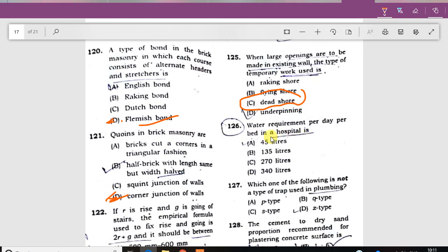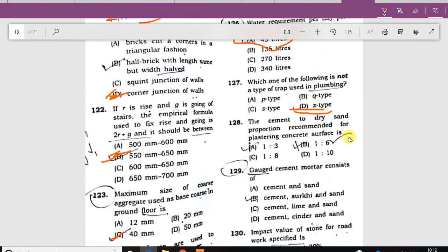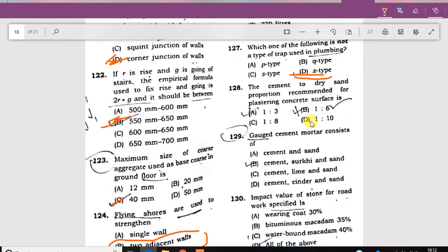The water required per day per bed in hospital is 45 liters. Which one of the following is not a type of trap used in plumbing? It is the Z type. The cement to dry sand proportion recommended for plastering concrete surface is 1 ratio 6.